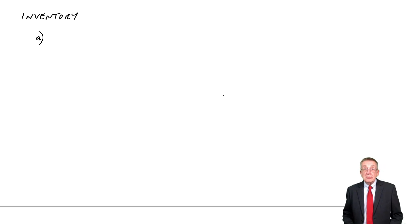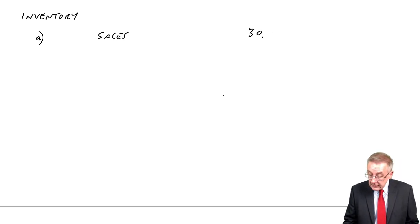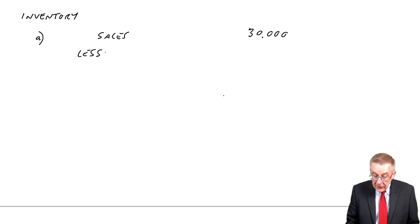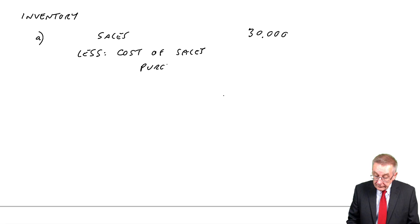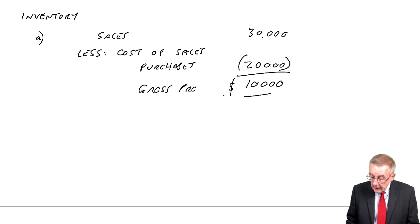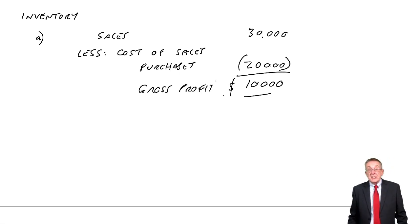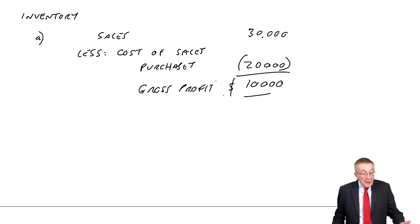I hope there's absolutely no problem to get that first bit of gross profit. We take the sales, which were 30,000. We subtract the cost of the sales, which was the purchases of 20,000. And therefore the gross profit is 10,000. Of course, in the full statement of profit or loss you've got all the various expenses. But that's the gross profit in the first year.